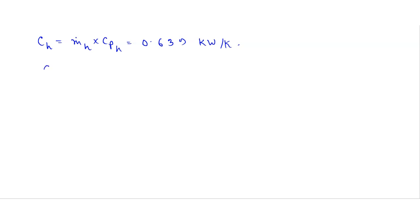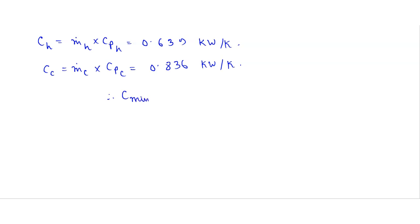Similarly, heat capacity for cold fluid is C_C equals M_dot_C multiplied by C_PC. After solving this we get the value for cold fluid as 0.836 kilowatt per kelvin. Here the minimum is the hot fluid, so C_minimum equals the heat capacity for hot fluid, which is 0.639 kilowatt per kelvin.